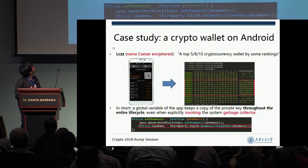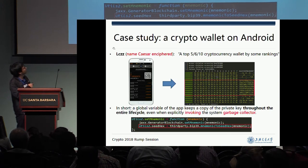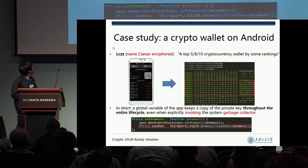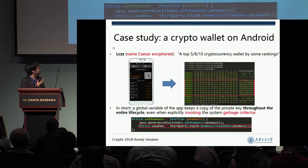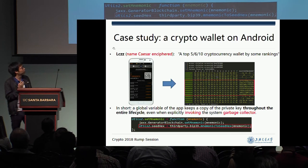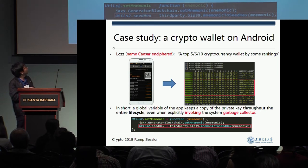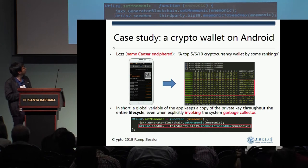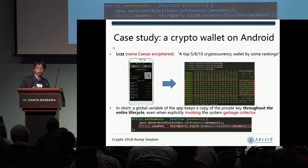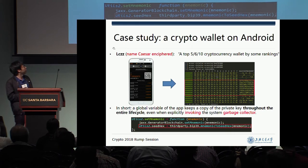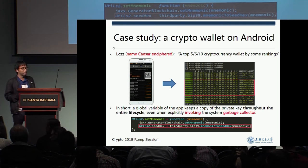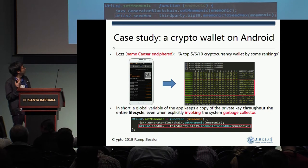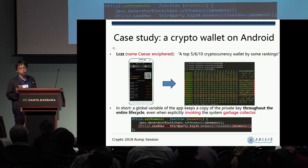We target the top 10 wallets according to many rankings. The names are anonymized, but enciphered with Caesar cipher. When the mnemonic code is transformed to the secret key, it just appears in memory in clear text during the whole lifetime of the app — even when the app is running in the background, or even when we explicitly invoke the garbage collector. This is because the global variable is out of reach of the garbage collector.